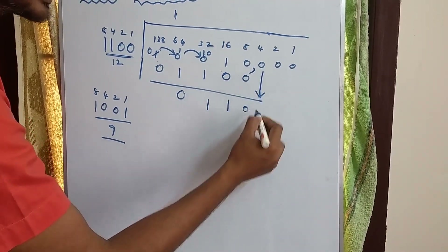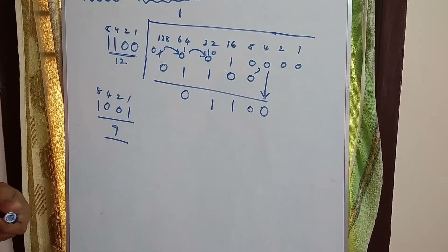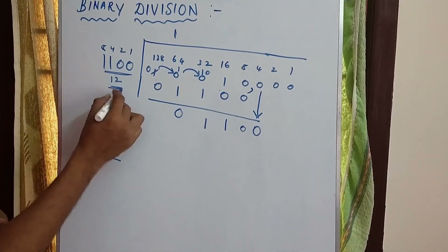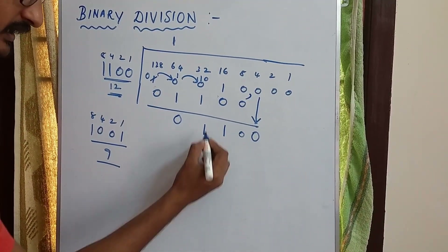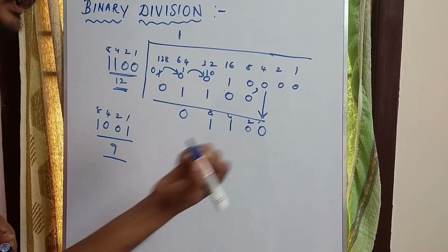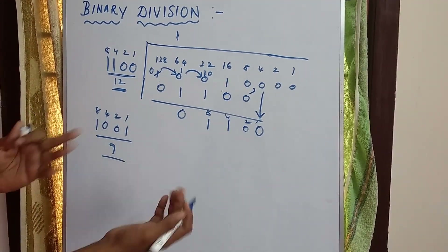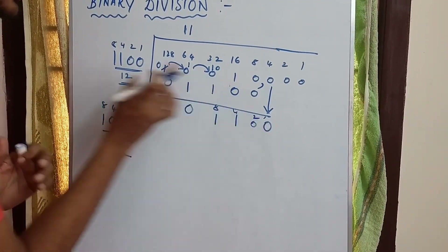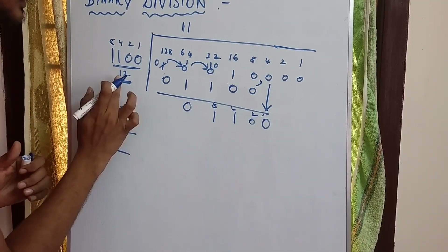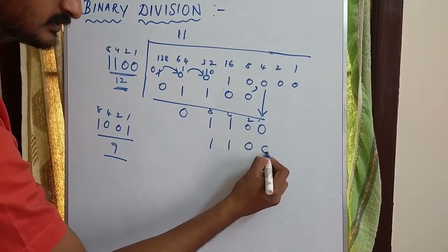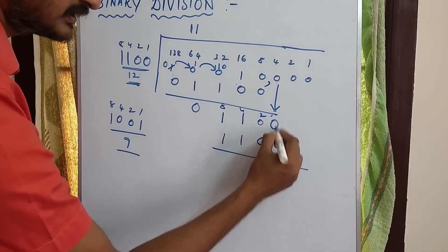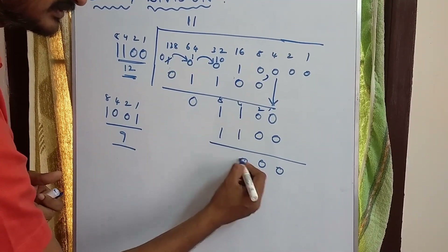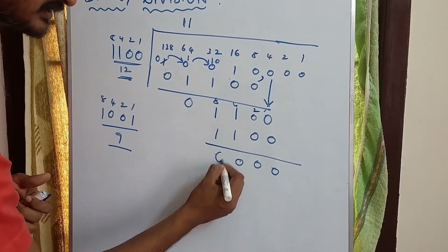Next we bring down another number, so the divisor is 1, 1, 0, 0. Now there is 12. Here is 8, 4, 2, 1, giving us 12. So 12 is equal to 12, meaning we have 1. So we subtract: 0 minus 0 is 0, 0 minus 0 is 0, 0 minus 0 is 0, 1 minus 0 is 0 — wait, 1 minus 1 is 0 and 1 minus 1 is 0.